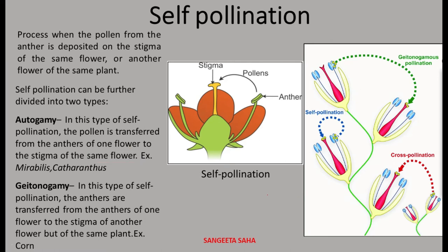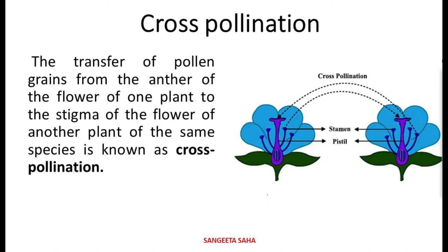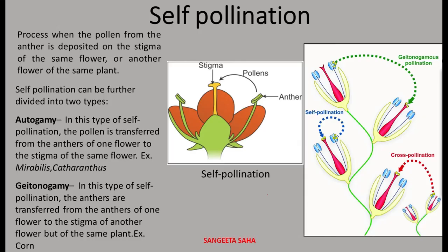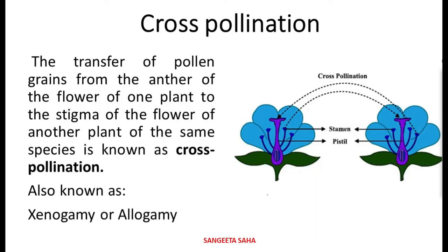Another type of pollination is cross-pollination. Here the pollen grain is transferred from the anther of one plant to the stigma of the flower of another plant — that is called cross-pollination. The transfer of pollen grain takes place from one flower of one plant to the stigma of another flower of a different plant. Cross-pollination is also known as xenogamy or allogamy.